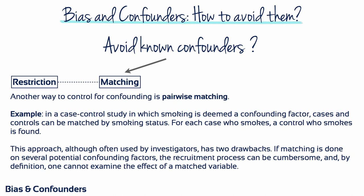A second option to control for confounding is called pairwise matching. In a case control study in which smoking is deemed a confounding factor, cases and controls can be matched by smoking status. For each case who smokes, a control who smokes is also found. This approach, although often used by investigators, has two drawbacks. If matching is done on several potential confounding factors, the recruitment process can be cumbersome. And, by definition, one cannot examine the effect of a matched variable.